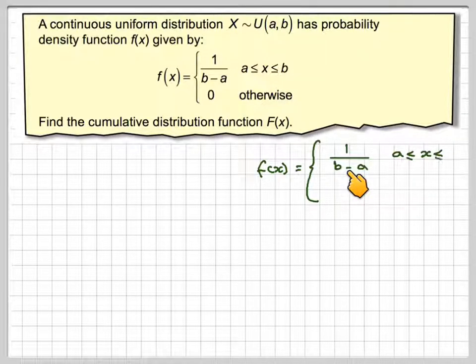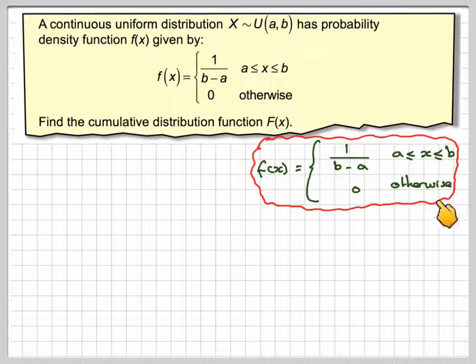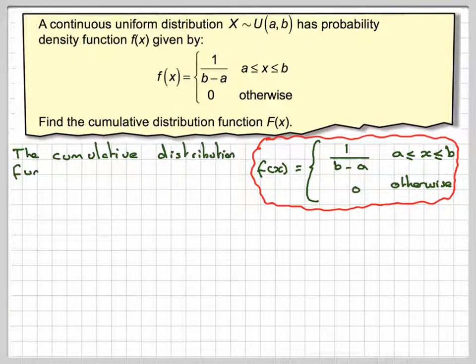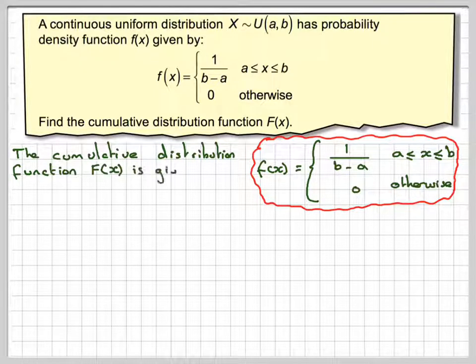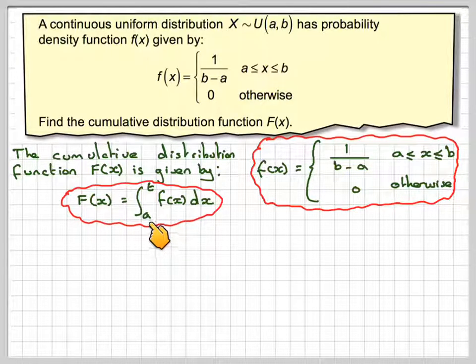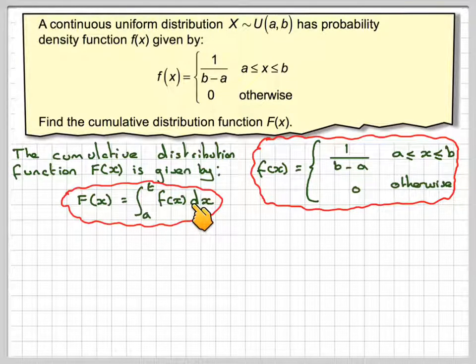So f(x) is 1 over b minus a, x being between a and b, and 0 otherwise. The cumulative distribution function is given by integrating f(x) from some starting value, which will be a in our case, to some arbitrary value t, f(x) dx.